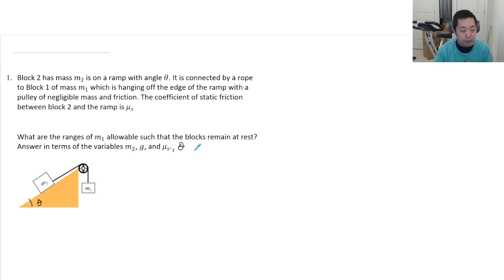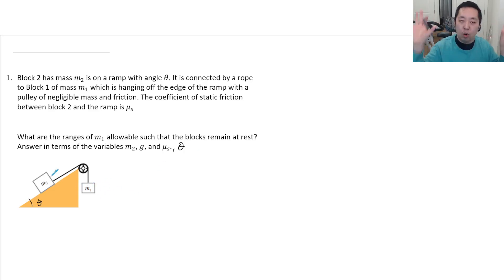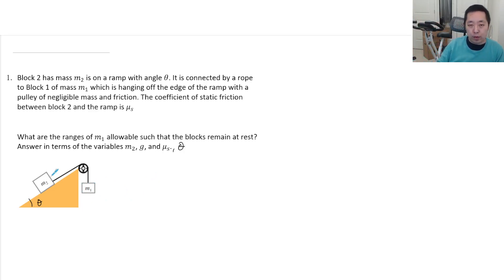That's just a typo — I forgot to include theta as part of the variables. So I want to know the ranges of M1 such that the whole system could remain at rest. What is causing it to remain at rest has to do with static friction.